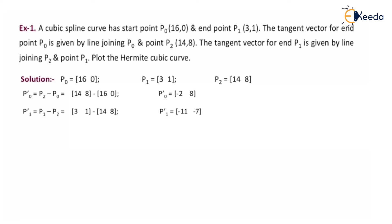Now for P1': remember that for P0', P2 is the end point and P0 is the initial point, so it is final minus initial. For P1', P1 is the end point while P2 is the initial point, so it is P1 minus P2, final minus initial. So (3, 1) minus (14, 8) gives P1' = (-11, -7).